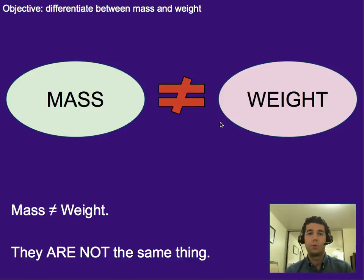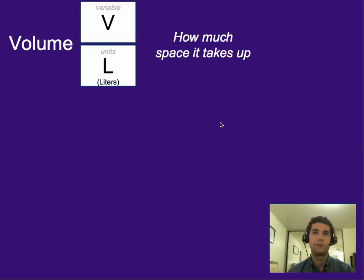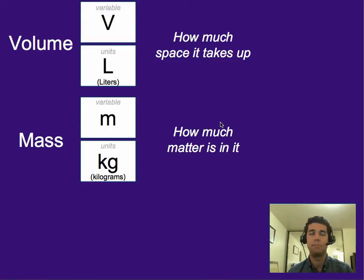So I told you before we're going to do this comparison, and we're going to do it now, which is mass is not weight. If they're not the same, then how are they different? Well, first, let's review what volume is. Volume is how much space something takes up. Its variable is V, measured in liters, or milliliters, or cubic centimeters, or cubic meters.